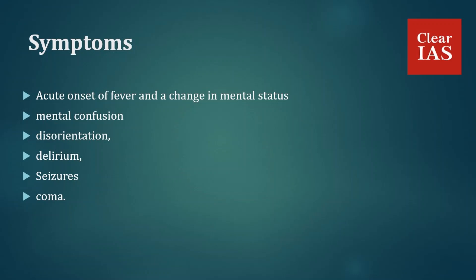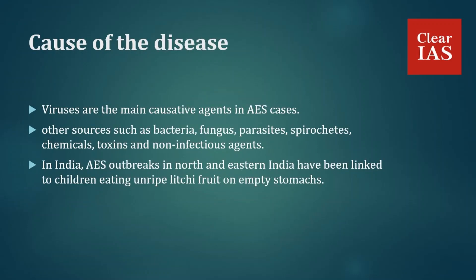Although disease outbreaks are usually reported during monsoons, between June and October, incidence is also reported from April to June, as seen in Bihar. The symptoms include acute onset of fever, change in mental status, and new onset of seizures in a person at any age and at any time of year.